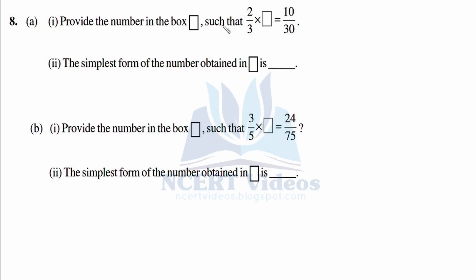Question 8: Provide the number in the box. The box in 2/3 times box equals 10 over 3. First find the value of the box, then convert it into simplest form. Similarly, the second part: 3/5 times box equals 24 over 75, then convert into simplest form if possible.